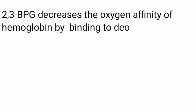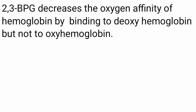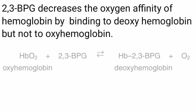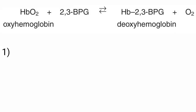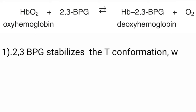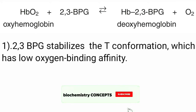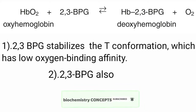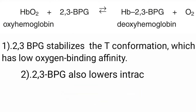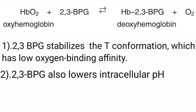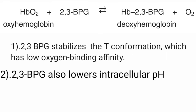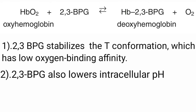2,3-bisphosphoglycerate decreases the oxygen affinity of hemoglobin by binding tightly to the deoxy state of hemoglobin, but it binds only weakly to the oxy state of hemoglobin. It stabilizes the T conformation, which has low oxygen binding affinity, and it also lowers the intracellular pH to 6.95. This dual role — stabilizing the T state and lowering the intracellular pH — results in oxygen unloading.